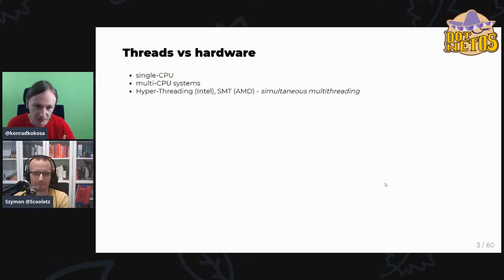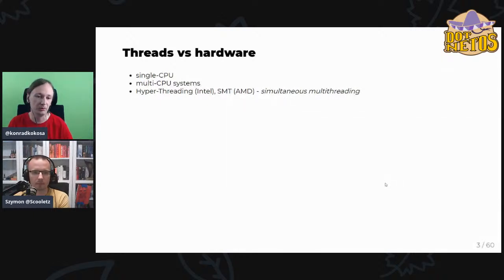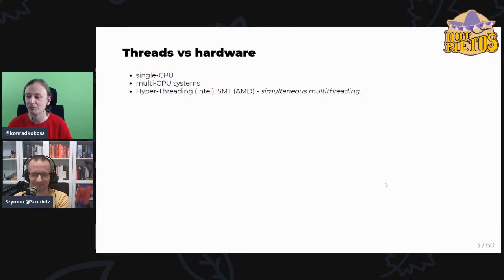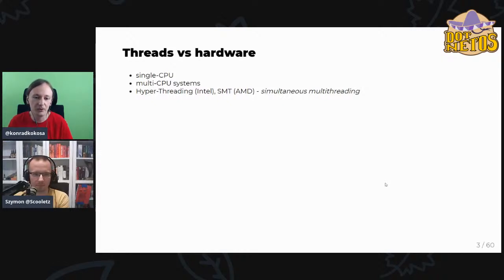When we talk about executing native code, we can ask: on what machine and in what context will it be executed? The most common scenario is a single CPU with a single socket in a desktop or laptop. If you have server machines, you may have multiple CPU systems. Most typically now we also use something called hyper-threading or SMT in the case of AMD — a very interesting technology. We'll cover how all these relate to executing C# code.